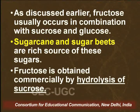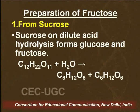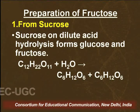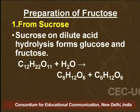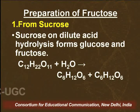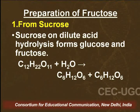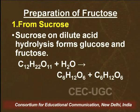If we want to obtain fructose commercially, it can be obtained by hydrolysis of sucrose. When we carry out hydrolysis of sucrose, it is carried out with dilute acid. We know sucrose is a disaccharide made up of glucose and fructose, so when it is hydrolyzed, it breaks down to give us glucose and fructose. Hydro means the reaction is brought about with the help of water, and lysis means that we are breaking the bond.